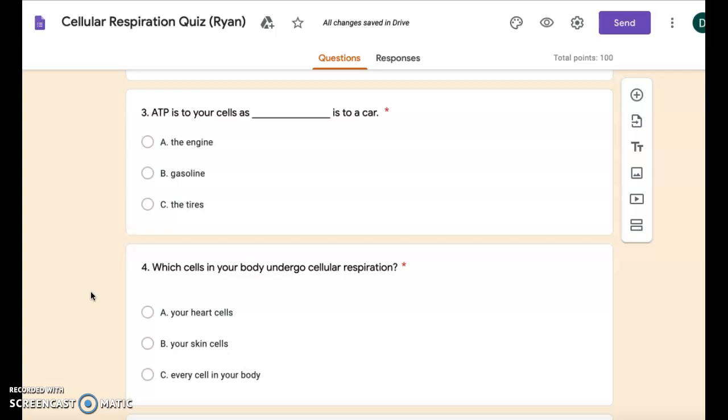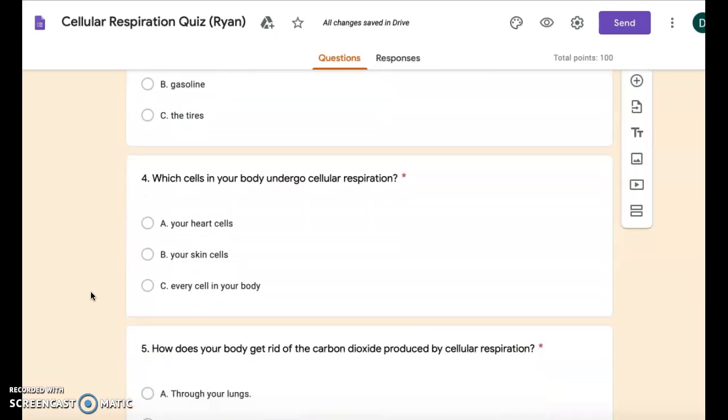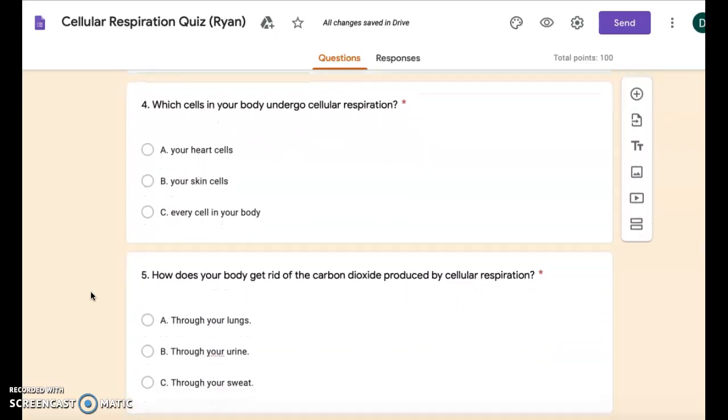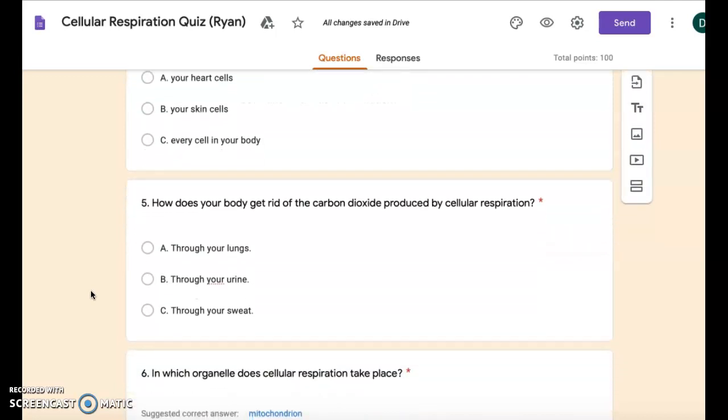Number four: Which cells in your body undergo cellular respiration? A: your heart cells. B: your skin cells. C: every cell in your body.